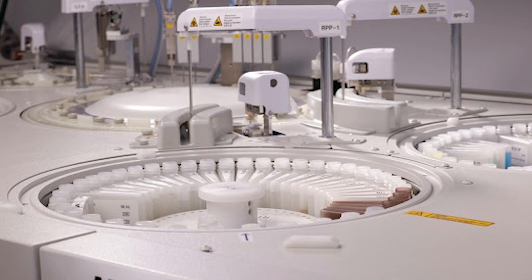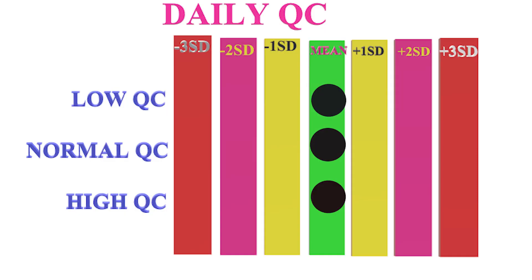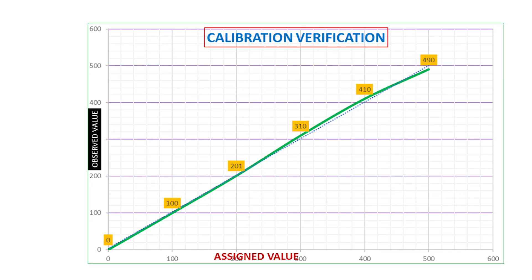The reputation of the lab, patient safety, and the quality of reports are affected due to errors in the lab. A lot of manpower, time, and budget is allotted for analytical errors — for calibration, quality control, proficiency testing, correlation between instruments, linearity studies, and other regular maintenance. Yet analytical errors are only 15 percent of total laboratory errors.